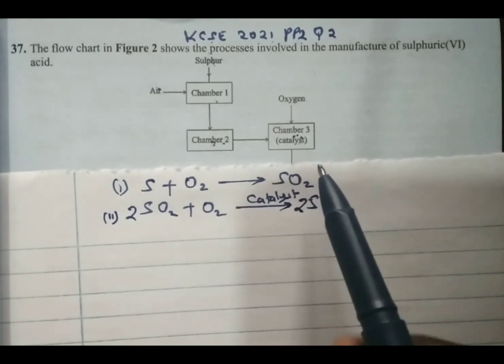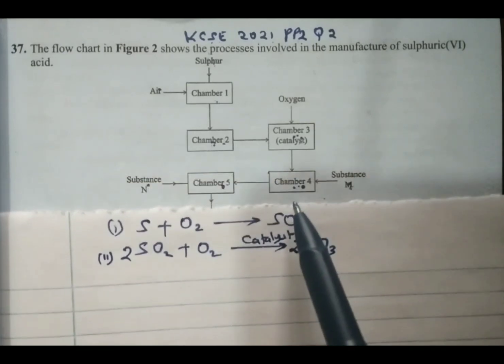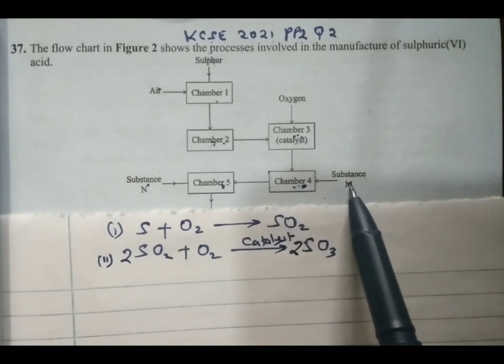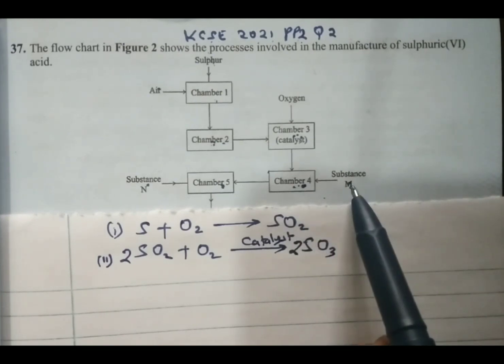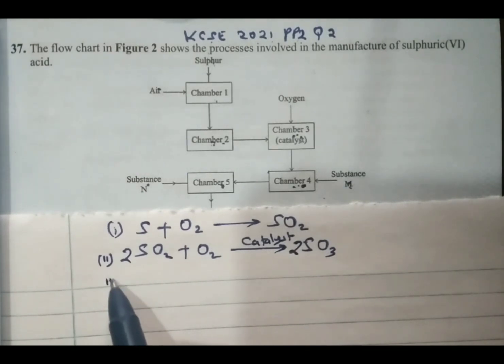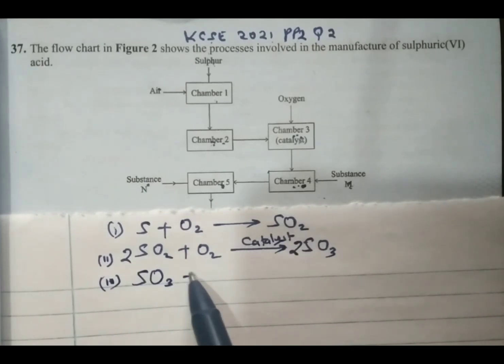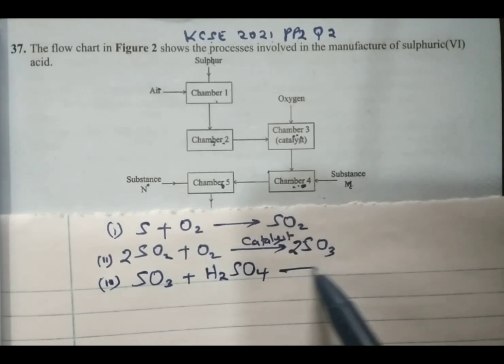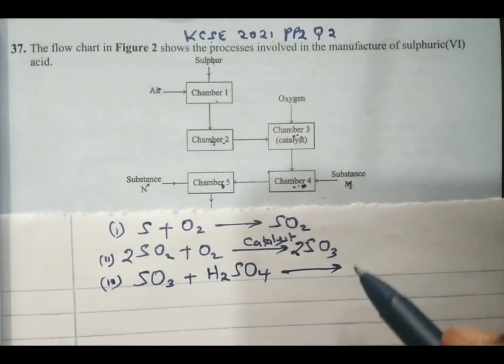Then the sulfur trioxide comes to chamber 4 where it is reacted with substance M, and substance M is concentrated sulfuric acid. Therefore, sulfur trioxide reacts with concentrated sulfuric acid to produce oleum.